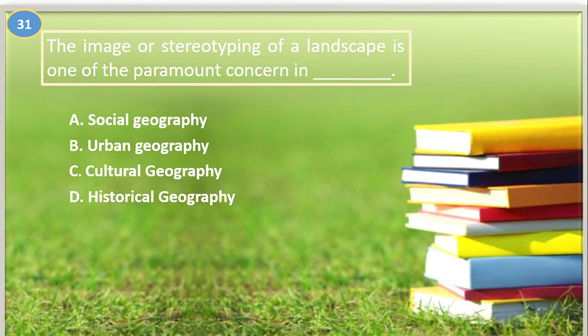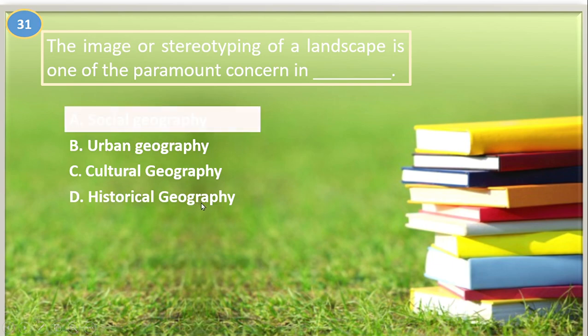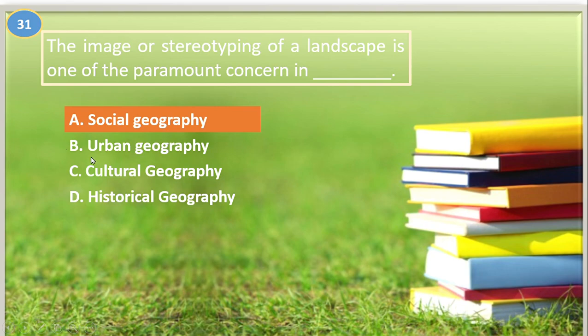Number thirty-one. The image or stereotyping of a landscape is one of the paramount concerns in: A. Social geography, B. Urban geography, C. Cultural geography, D. Historical geography. The answer is social geography.